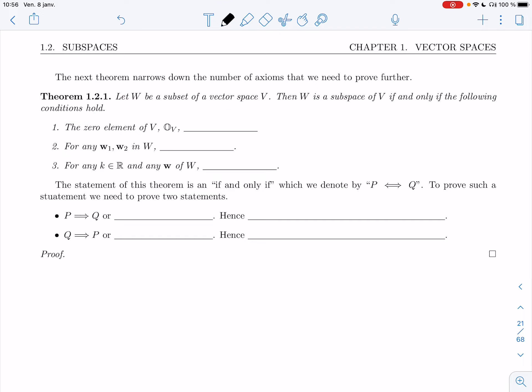First one, the zero element of V, which I'll denote by 0 with a V subscript whenever there might be confusion, 0_V needs to be in W.